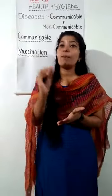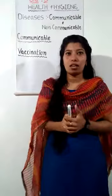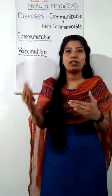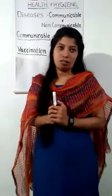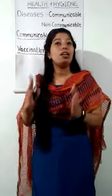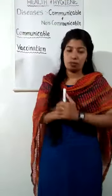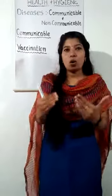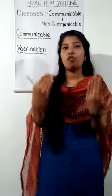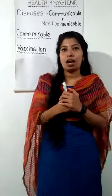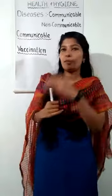Mosquitoes and some other insects like flies and bugs transmit germs through their bites to the human body. So malaria is caused by a mosquito bite. Let's see another type of communicable disease — that is measles. Measles spreads by very tiny organisms called germs and is a type of communicable disease.